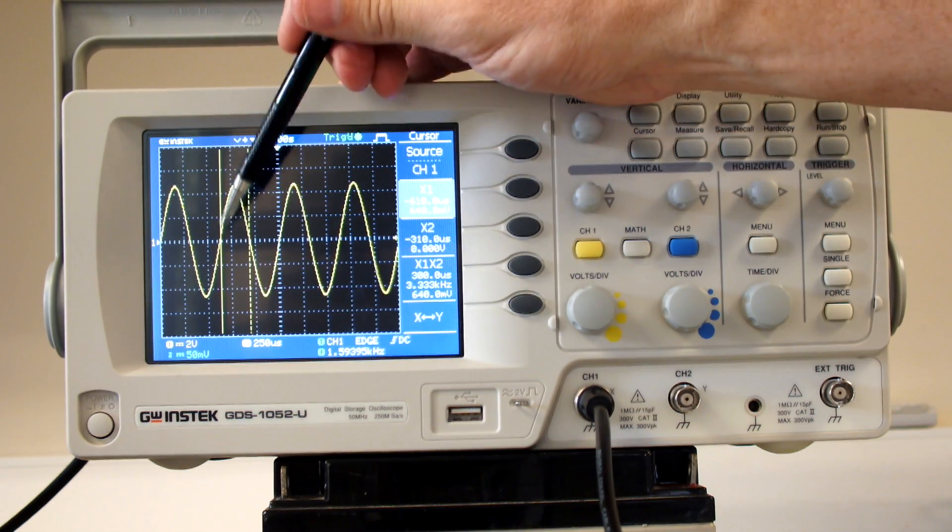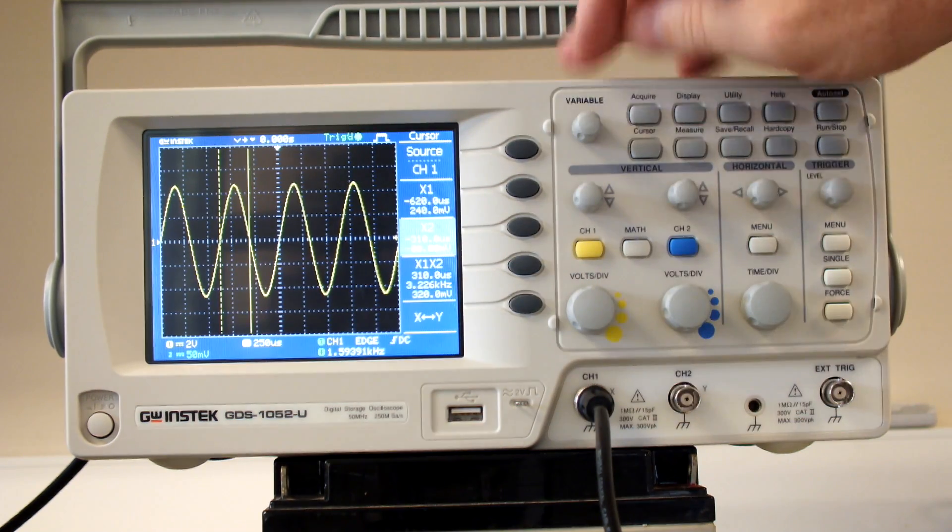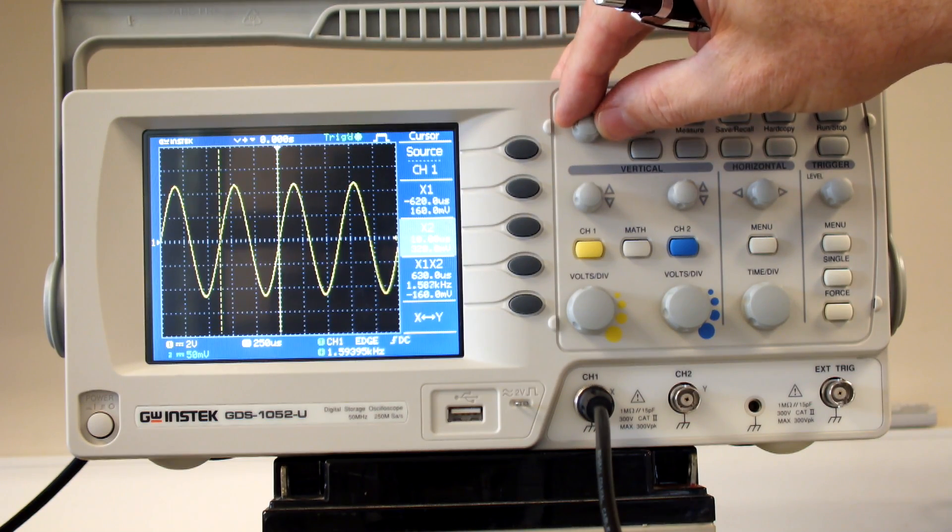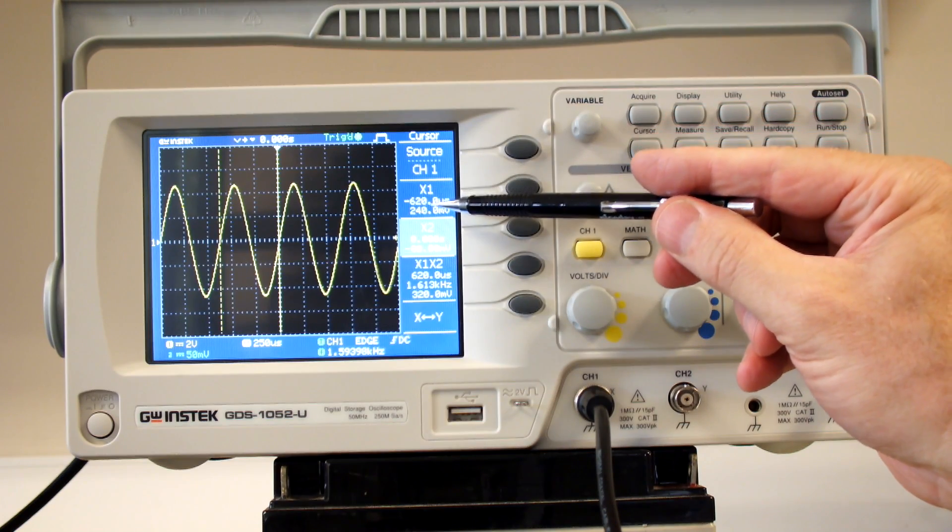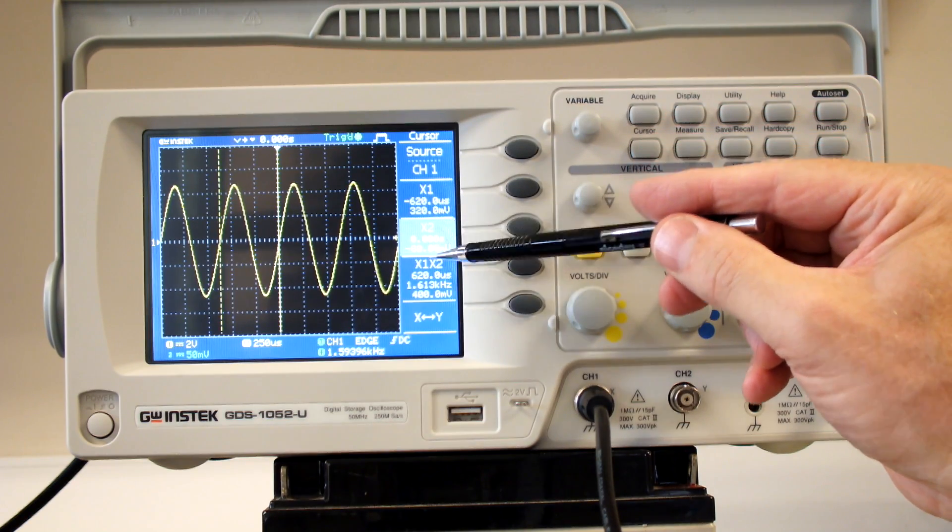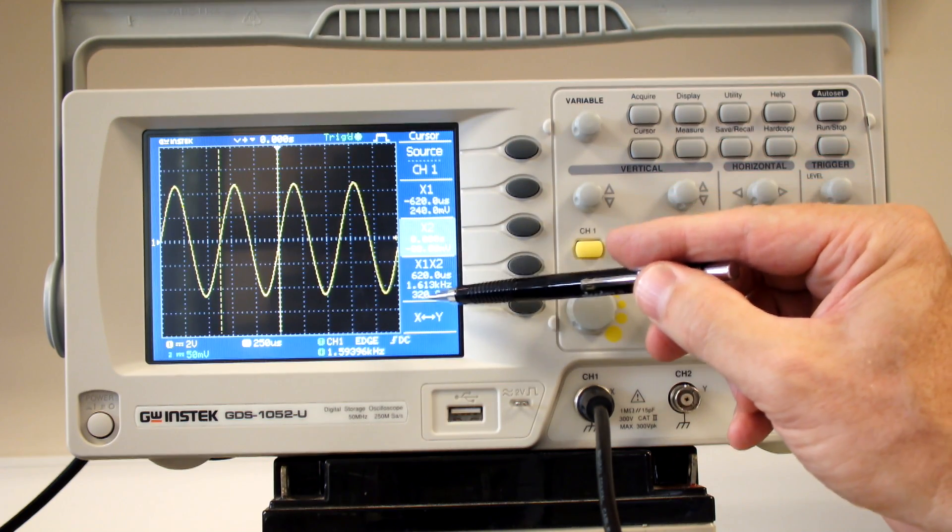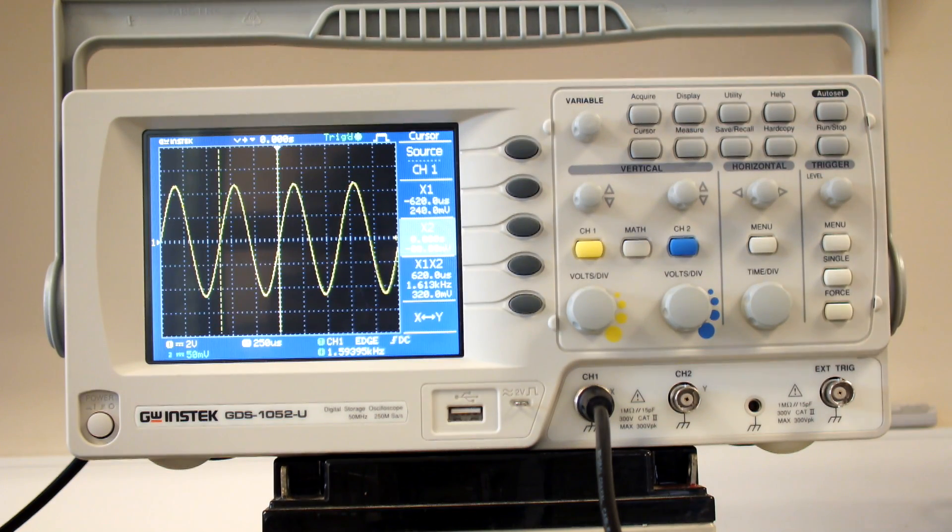X2, I adjust to be where it crosses the axis again, so it's one period. It's measuring the time: X1 minus 620 microseconds, X2 is zero pretty much, and the difference comes out at 620 microseconds. It even calculates that as a frequency—it's not measuring frequency, it's just telling you what this period is as frequency.